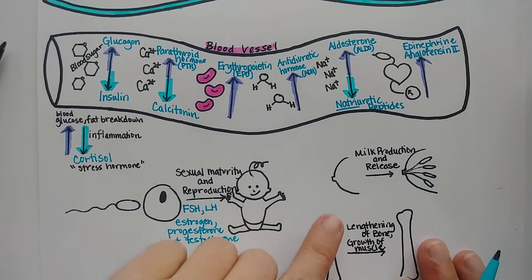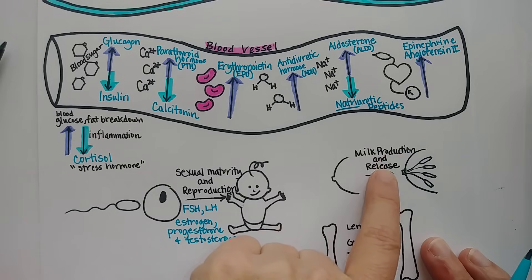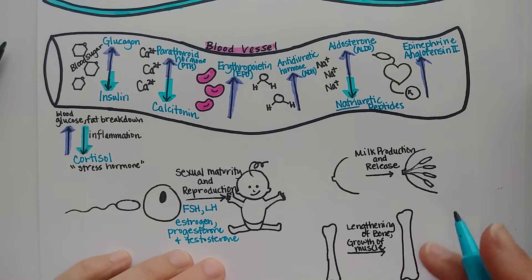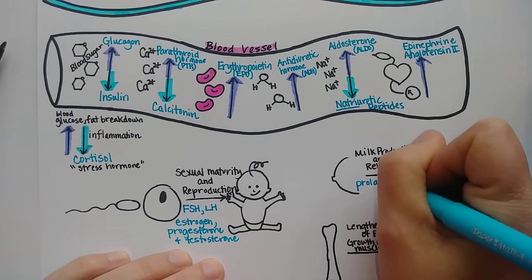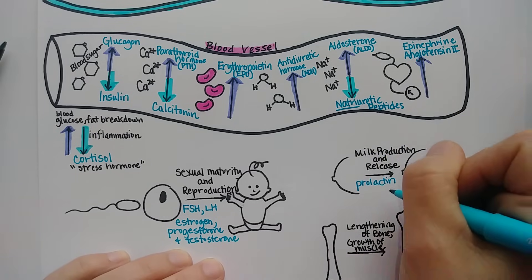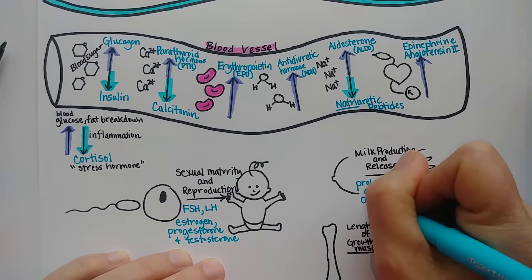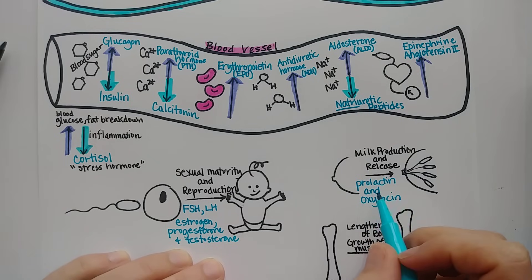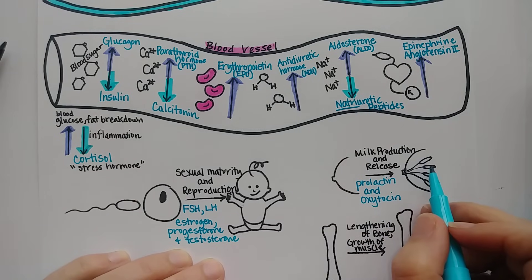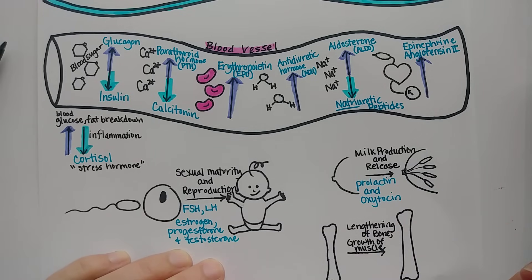Milk production and release is under the control of two important hormones from the pituitary gland: prolactin and oxytocin. During pregnancy, these hormones help the mammary glands develop and begin producing milk. Oxytocin then actually allows the milk to be released when the baby is nursing.